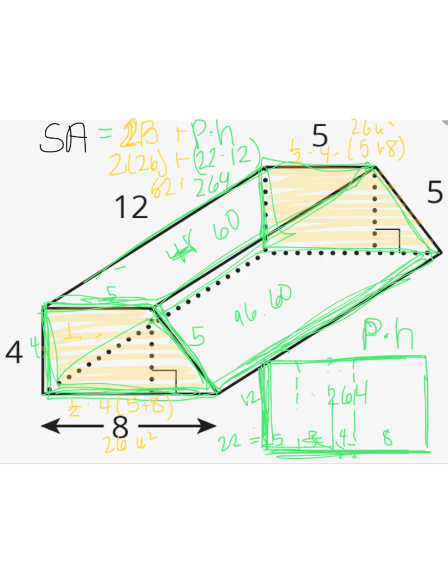You might say that's a lot of work, and it was — but what it does is keep us from having to make nets. By doing it this way and using the formula, it's still difficult, but at least you don't have to make a net of a trapezoidal prism. So the total surface area is 316 units squared. Thanks.